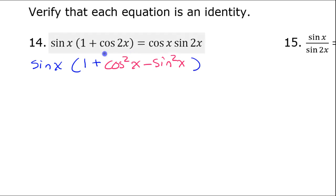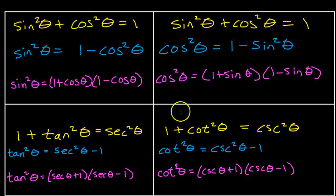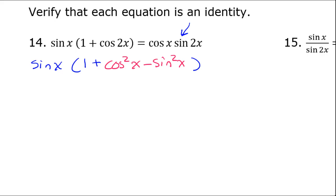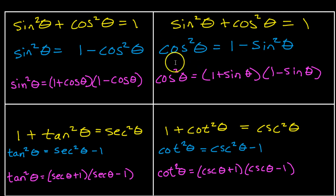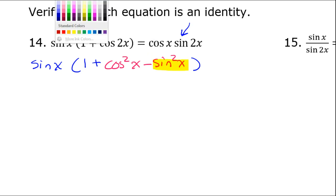When you're verifying an identity, you can only work on one side. I am just going to continue working the left side until I get the target expression — I cannot come over to the right side and change it. Now, I think we're going to need our Pythagorean identities. Looking at sine squared x, we know that sine squared equals 1 minus cosine squared. So let's make that substitution.